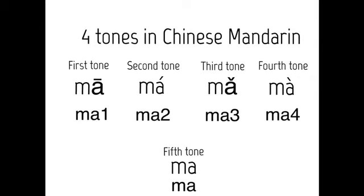Third tone — the mark above the letter looks like a letter V, or a check mark. Your voice goes down and then back up again. It takes a few seconds because of the dip. Third tone sounds like: ma, ma, ma.